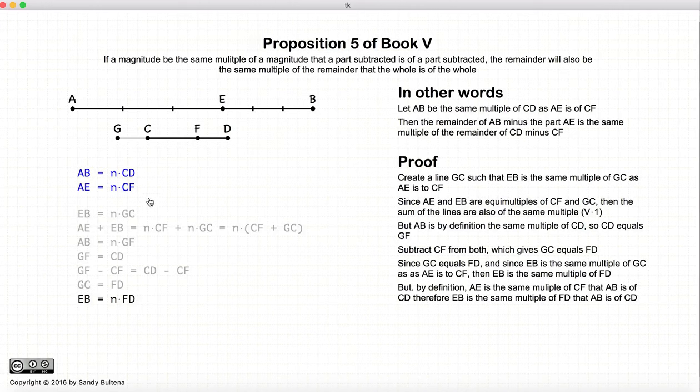However, we started this by saying that AE and AB were equal multiples of CD and CF respectively. And since EB and AE are also equal multiples of CF and FD respectively, finally, we have that EB and AB are equal multiples of CD and FD. And that is our proof.